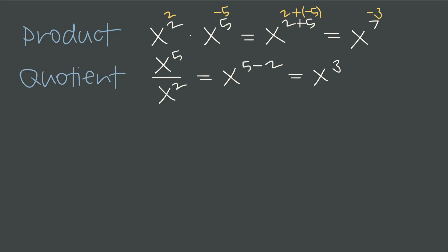The quotient rule says that when we divide terms with like bases, we subtract the exponents. So x to the fifth divided by x squared is x to the 5 minus 2. When we have a negative exponent — say the numerator is x to the negative 3 instead — the rule stays exactly the same: negative 3 minus 2 is negative 5, and the result is x to the negative 5.